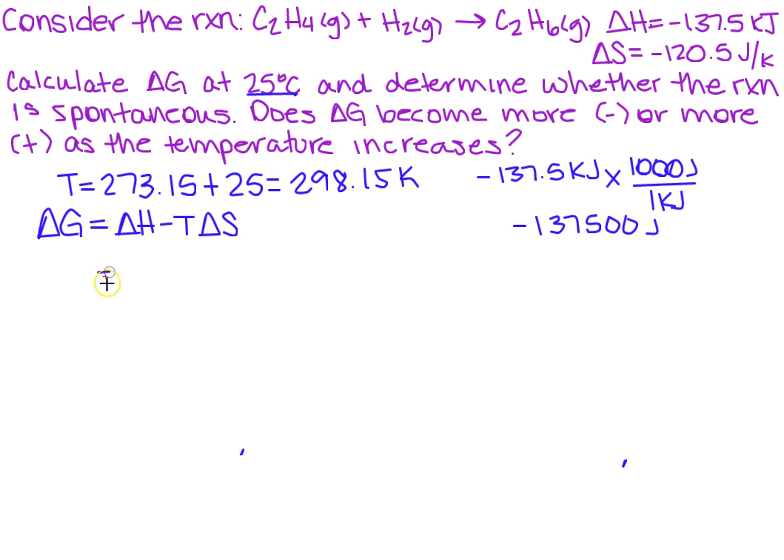So now I can literally do that. So I've got delta H, which is what we just found, so that's going to be minus 137,500, minus the temperature that we just found, which is 298.15 Kelvin times delta S, which is the minus 120.5 joules per Kelvin.